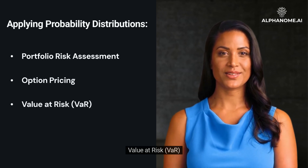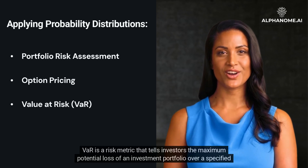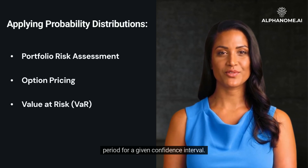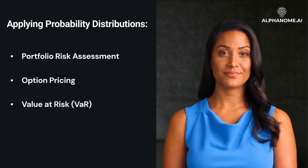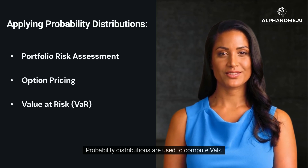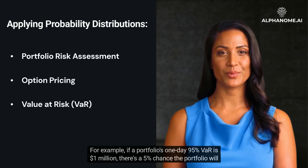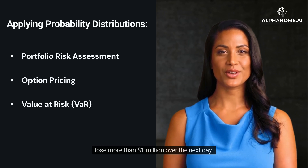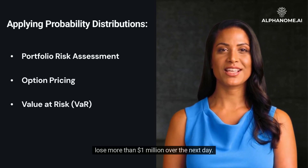Value at Risk (VAR): VAR is a risk metric that tells investors the maximum potential loss of an investment portfolio over a specified period for a given confidence interval. Probability distributions are used to compute VAR. For example, if a portfolio's one-day 95% VAR is $1 million, there's a 5% chance the portfolio will lose more than $1 million over the next day.